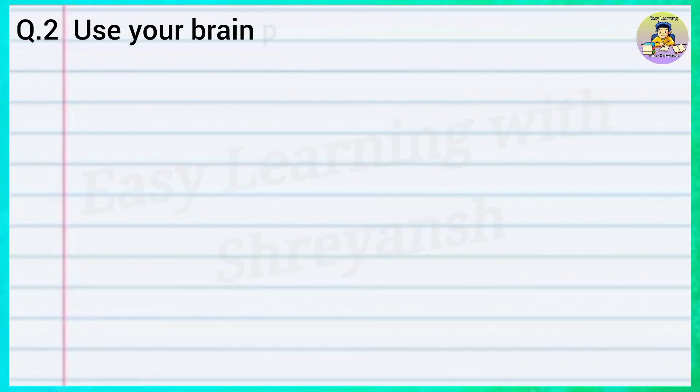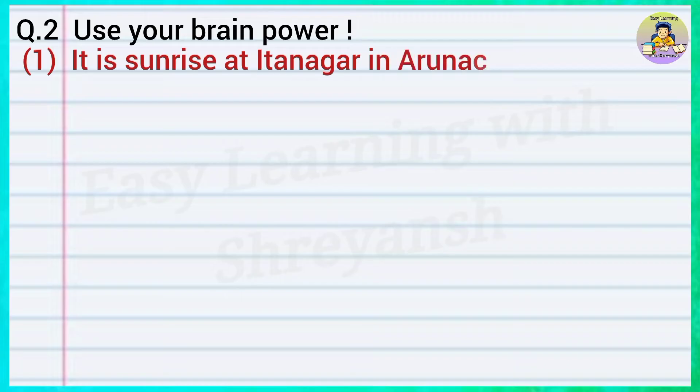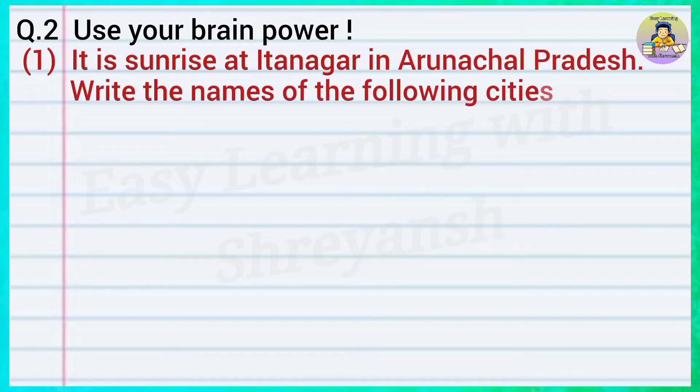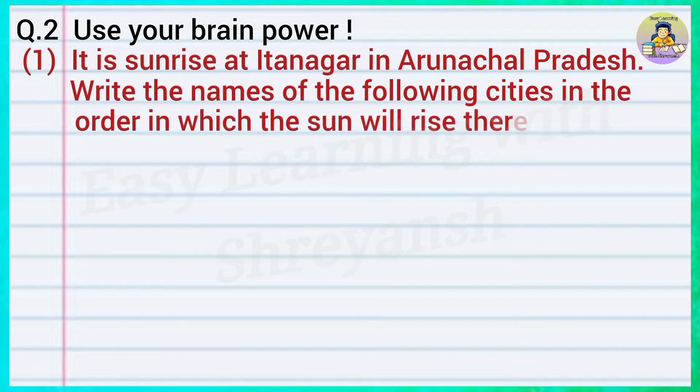Question number 2: Use your brain power. It is sunrise at Itanagar in Arunachal Pradesh. Write the names of the following cities in the order in which the sun will rise there.